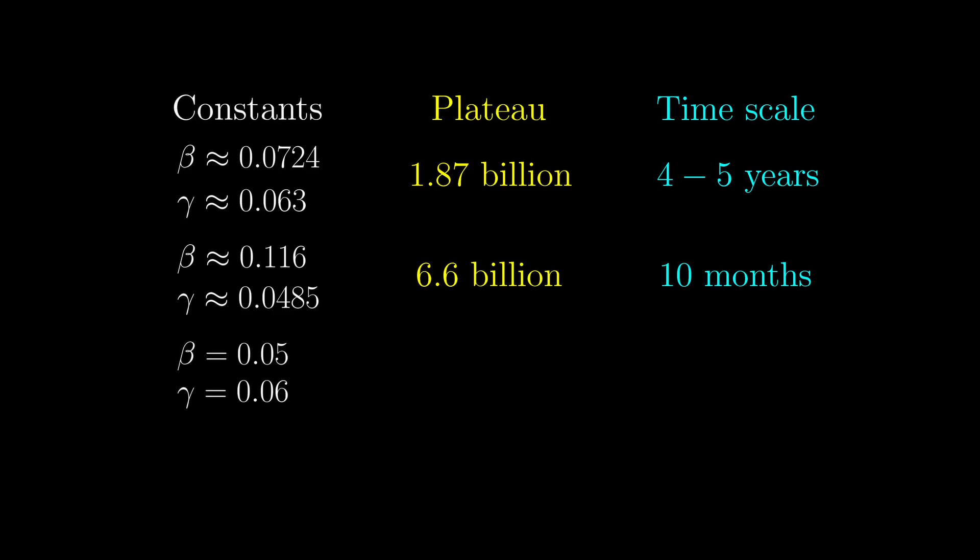In fact, if we set beta to be 0.05 and gamma to be 0.06, so that the ratio is less than 1, the plateau will be at around 390,000. And this epidemic will practically finish after around 20 days. That means around early April. But the problem is how to change these constants so that we get this optimistic scenario.